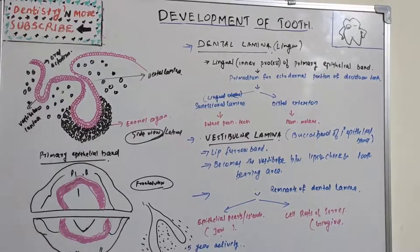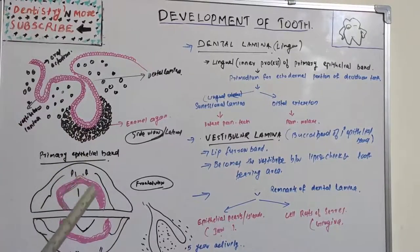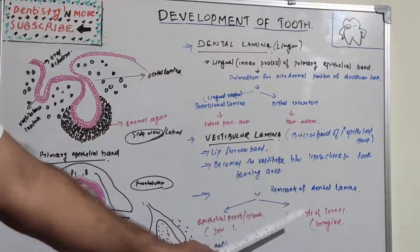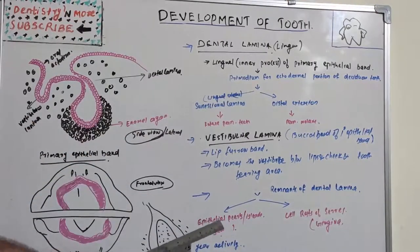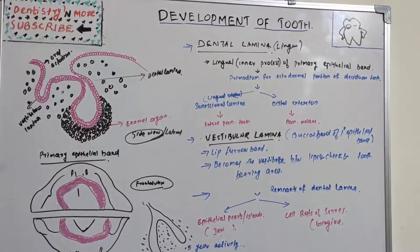The dental lamina has approximately five years of activity. After this period, it ruptures and the tooth loses its connection to the dental lamina. Remnants may persist in the jaw or gingiva. Remnants in the jaw are called epithelial pearls or islands, while remnants in the gingiva are called cell rests of Serré. These are important clinical terms.